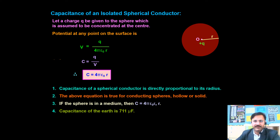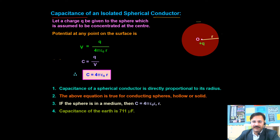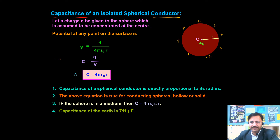Today we are going to deal with the new topic: capacitance of a conductor. Suppose a conductor is there which is spherical in shape. When a plus Q charge is given to this spherical conductor, that charge will reside only on its outer surface. Because of this charge, the potential will be developed on its surface, which we can write as V = 1/(4πε₀) × Q/R.